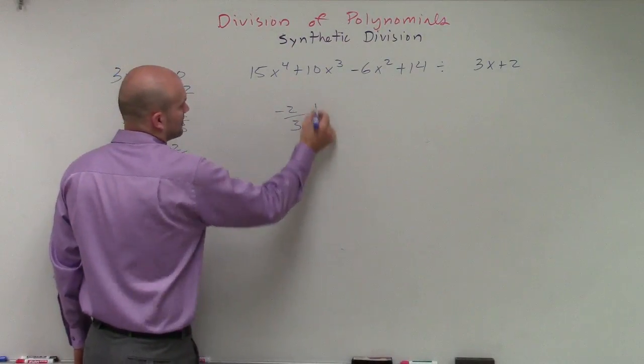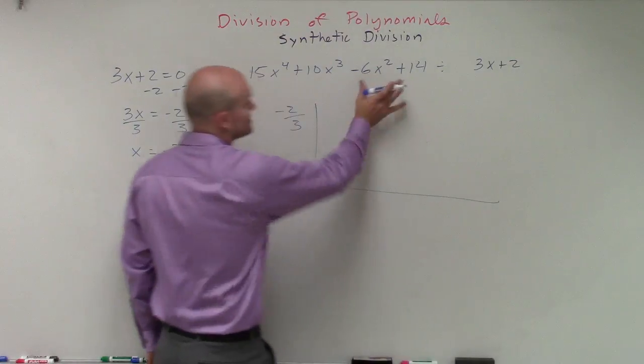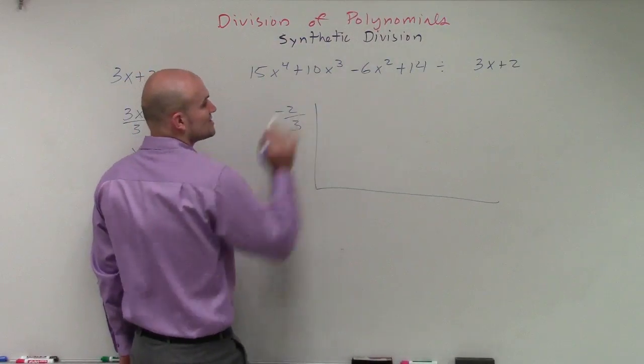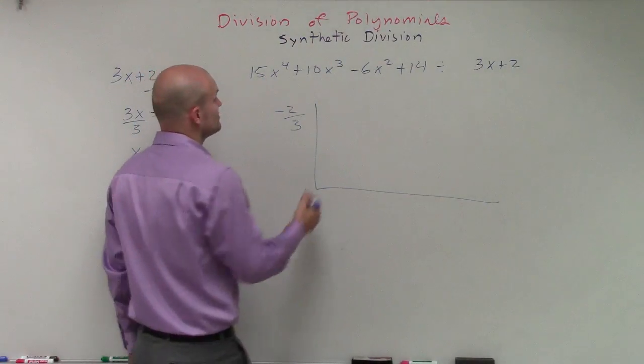So I'm going to place that on the top, on the outside of my box. Then I'm going to take the coefficients of each term. Notice that I do not have a linear term, so we're going to use 0 for that.